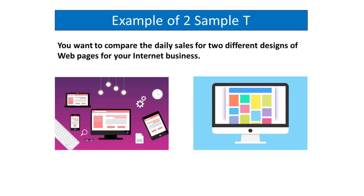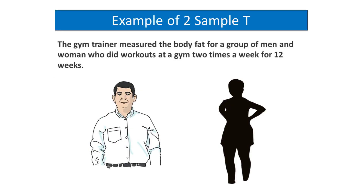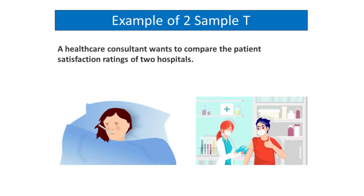Let's take an example. You want to compare the daily sales for two different designs of web pages for your internet business. Another example is the gym trainer measured the body fat for a group of men and women who did workouts at a gym two times a week for 12 weeks. A health care consultant wants to compare the patient satisfaction ratings of two hospitals. The hospitals are independent samples as measurements for the first hospital do not affect measurements for the second hospital.